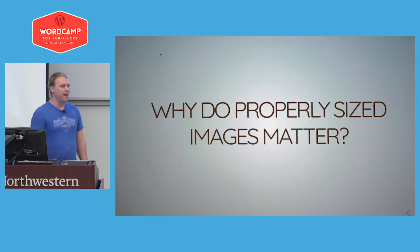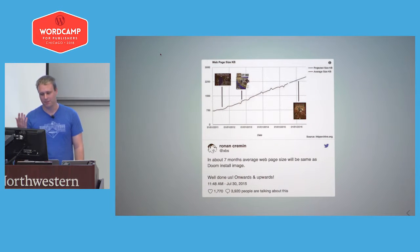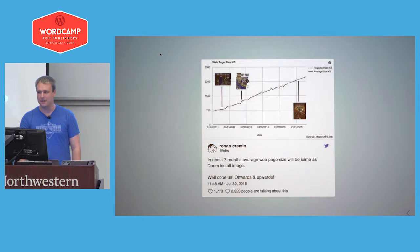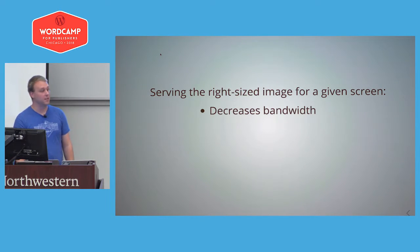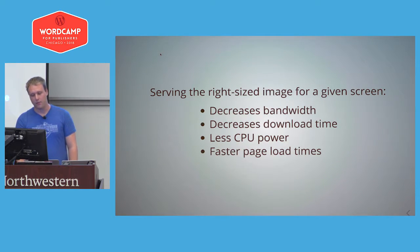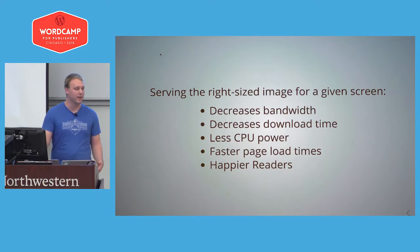So why do properly sized images even matter? Why can't we just use a bigger image where a smaller exact size would fit? The answer is speed, which has been a common theme in all the talks here. My favorite analysis is this tweet comparing the size of websites to the size of the original Doom install file. The web is getting bigger and bigger, and speed is a big barrier. Serving the right size image for a given screen decreases bandwidth, decreases download time, uses less CPU power — thinking mobile devices — and results in faster page load times, giving us happier readers who are more likely to support what we're trying to do.